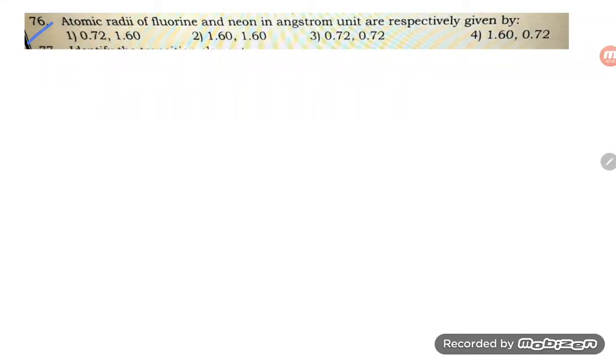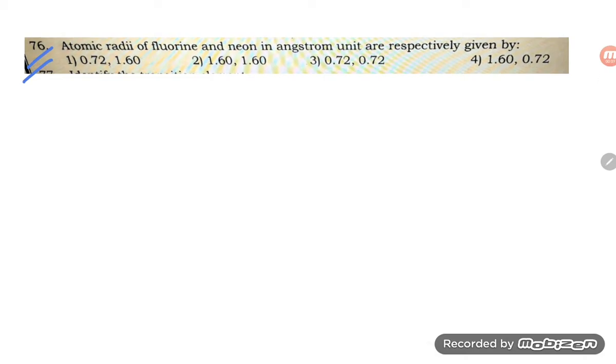Hello students, now let us see problem number 76. This is a quite easy problem. We are given atomic radii of fluorine and neon in angstrom units respectively.